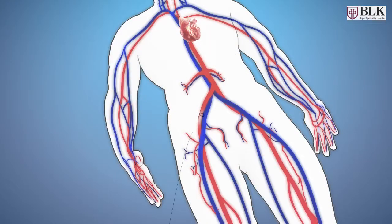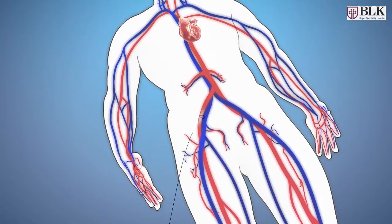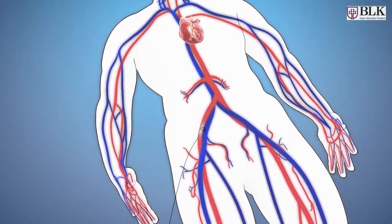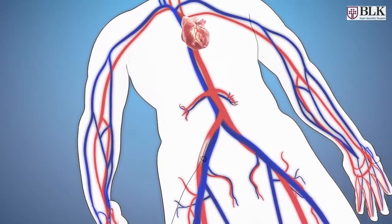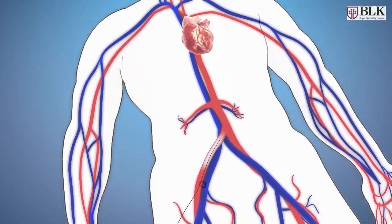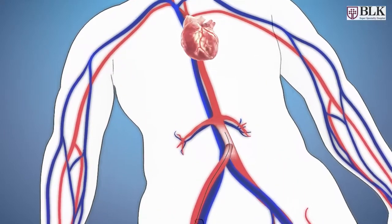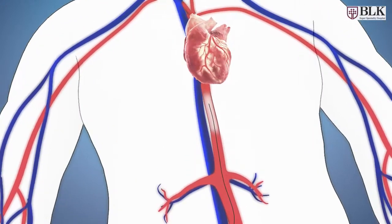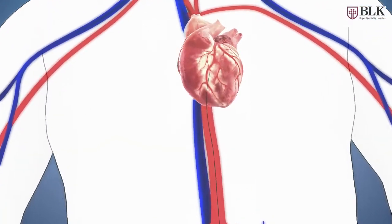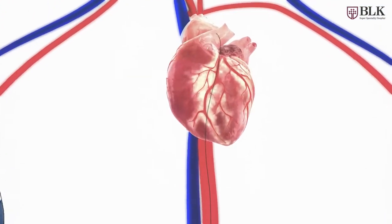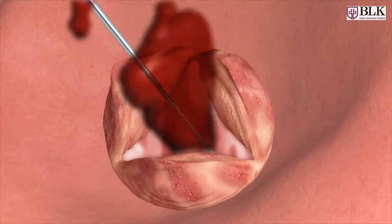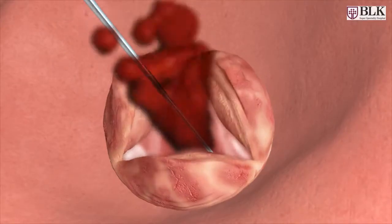A guide wire is inserted in the groin area without a cut-through sheath, inside the femoral artery. The guide wire travels all the way from the aorta into the left ventricle, passing through the diseased aortic valve, and a catheter travels up to the aortic valve.